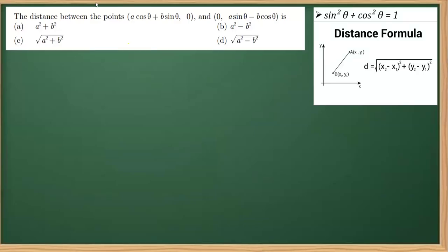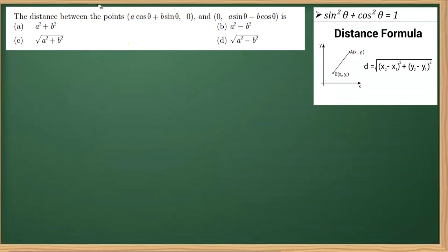In this MCQ, we have to find the distance between these two points. This question actually uses two relations: one is the relation between sine square and cos square, that is sin²θ + cos²θ = 1, and the other is the distance formula — the distance between any two points is given by √((x2 - x1)² + (y2 - y1)²).